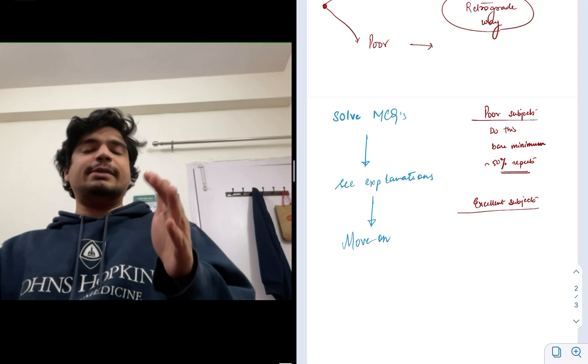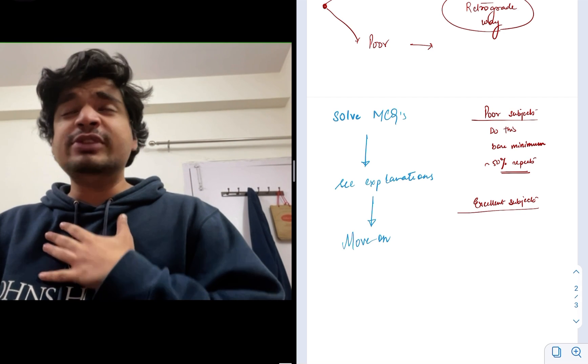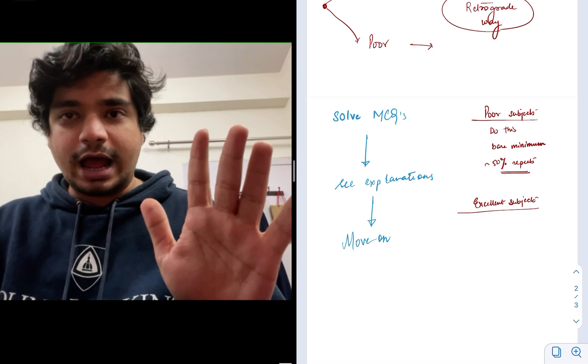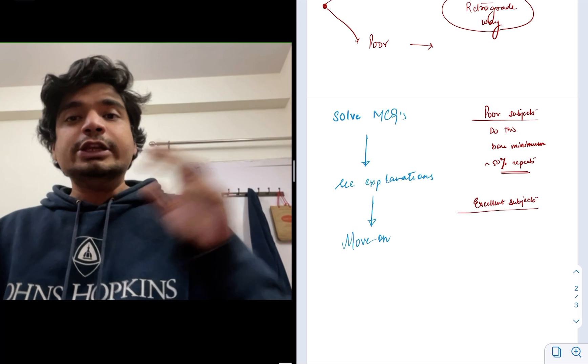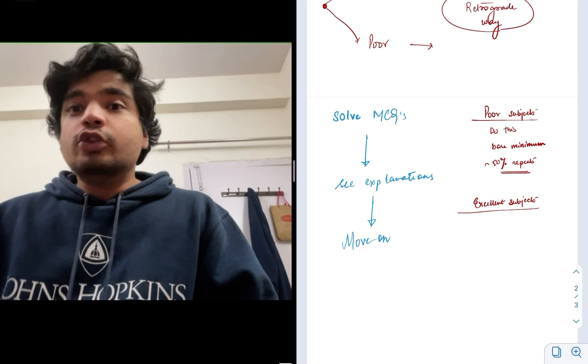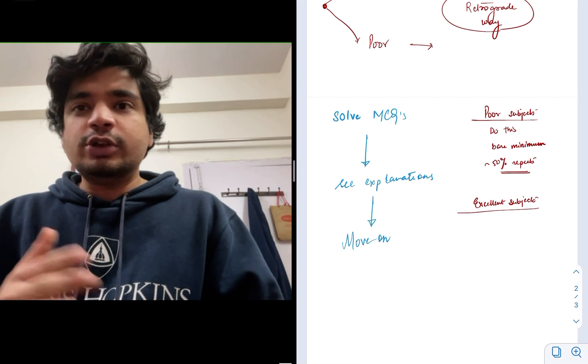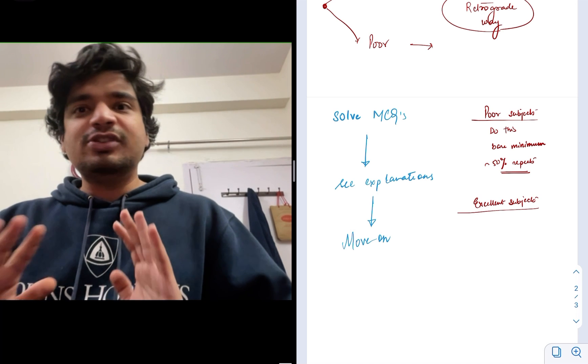Let me take an example of post-graduation. I was excellent in biochemistry. I had a gold medal in biochemistry. I knew that my basal knowledge, my basic knowledge of biochemistry is already very strong. So all I need to do is just practice MCQs, see the explanation of those MCQs and move on.